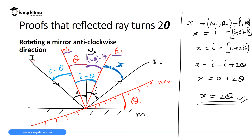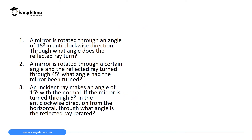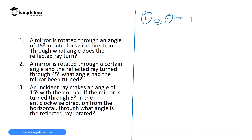As you can see, in both cases — whether clockwise or anticlockwise — the reflected ray will rotate twice the angle through which the mirror rotated. We have a set of questions. Let me handle the first one: a mirror is rotated through an angle of 15 degrees in an anticlockwise direction; through what angle does the reflected ray turn? The reflected ray turns twice the angle, so x equals 2 times 15, which gives 30 degrees. The reflected ray will turn at an angle of 30 degrees.